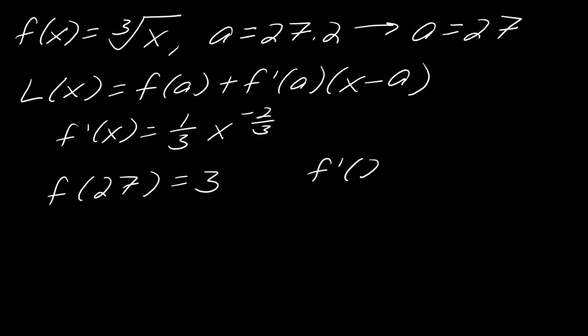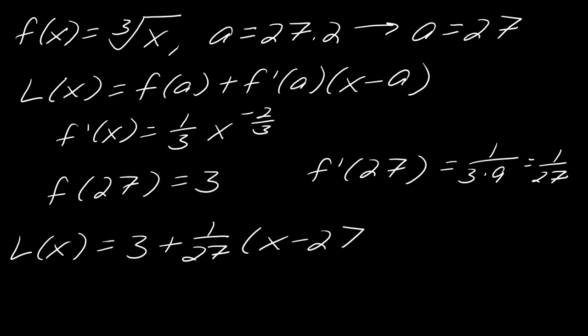And then f prime of 27. So that would be one third times nine. So this comes out to 1 over 27. Okay, so now we can linearize here.